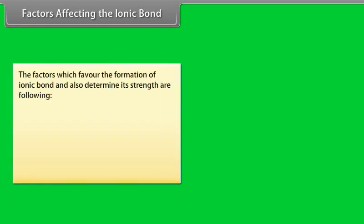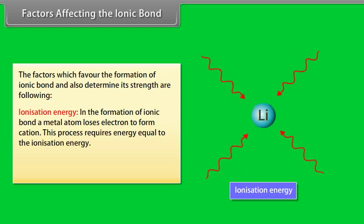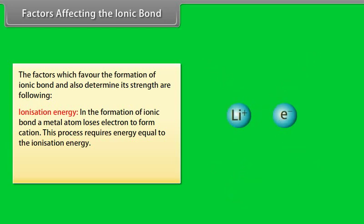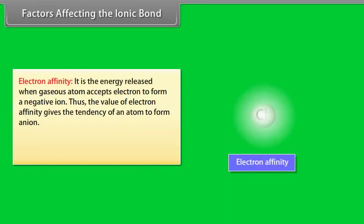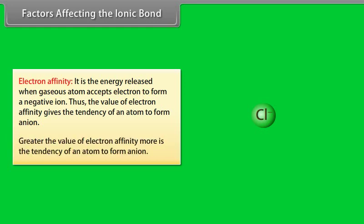Factors affecting the ionic bond: Ionization energy — in the formation of ionic bond, a metal atom loses electrons to form a cation. Lesser the value of ionization energy, greater is the tendency of the atom to form a cation. Electron affinity — it is the energy released when a gaseous atom accepts an electron to form a negative ion. Greater the value of electron affinity, more is the tendency of an atom to form an ion.